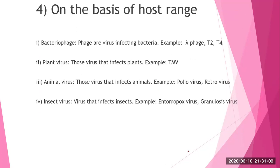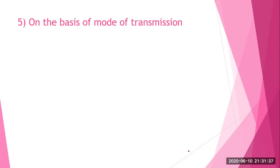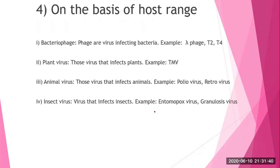Another classification is on the basis of host range — which kind of host the virus will infect. When it infects bacteria it is called a bacteriophage; example: T2 or T4 phage. Plant virus infects plants; example: TMV (tobacco mosaic virus). Animal virus infects animals; example: poliovirus, retrovirus. Insect virus infects insects; example: entomopoxvirus or densonucleosis virus.